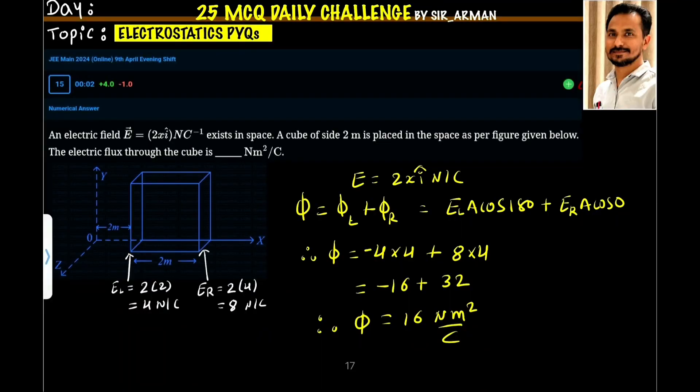An electric field E equals 2x i cap. This is similar to NCERT example chapter number 1. The electric field is varying—it changes with distance. It is 2x i cap and is going in the x direction. The electric field is in the x direction.